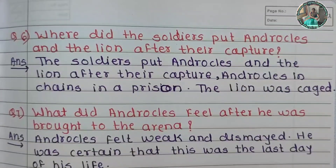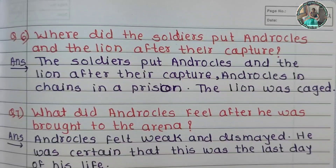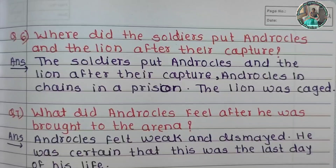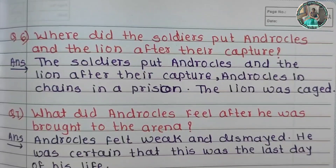Question number six: Where did the soldiers put Androcles and the lion after their capture? The soldiers put Androcles in chains in a prison, and the lion was caged.